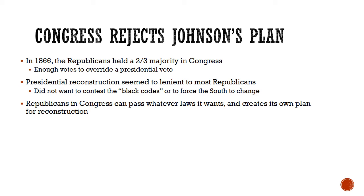The first stage of Reconstruction was dominated by Abraham Lincoln's and later Andrew Johnson's lenient plans for reintegrating the Southern states into the United States. But things began to change in 1866 when Republicans won a two-thirds majority in Congress, and this gave them enough votes to override a presidential veto. That means Congress can pass any law that it wants, and the president is powerless to stop it.